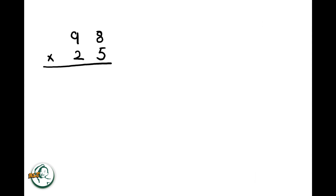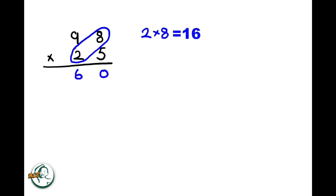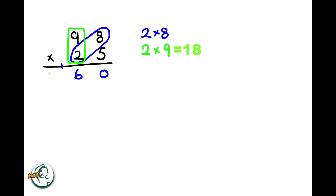Into another example, 98 times 25. Firstly, we start by writing down a 0. So, we multiply 2 by 8, giving us 16. We write down the 6 and carry over the 1. Next, we multiply 2 by 9, resulting in 18. Adding the carried over 1 to 18, we get 19.